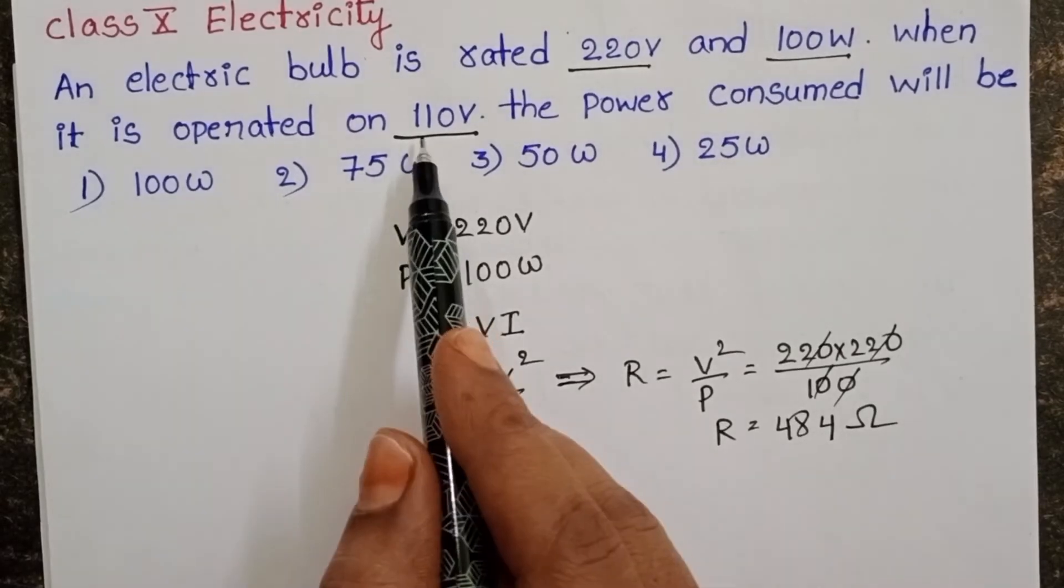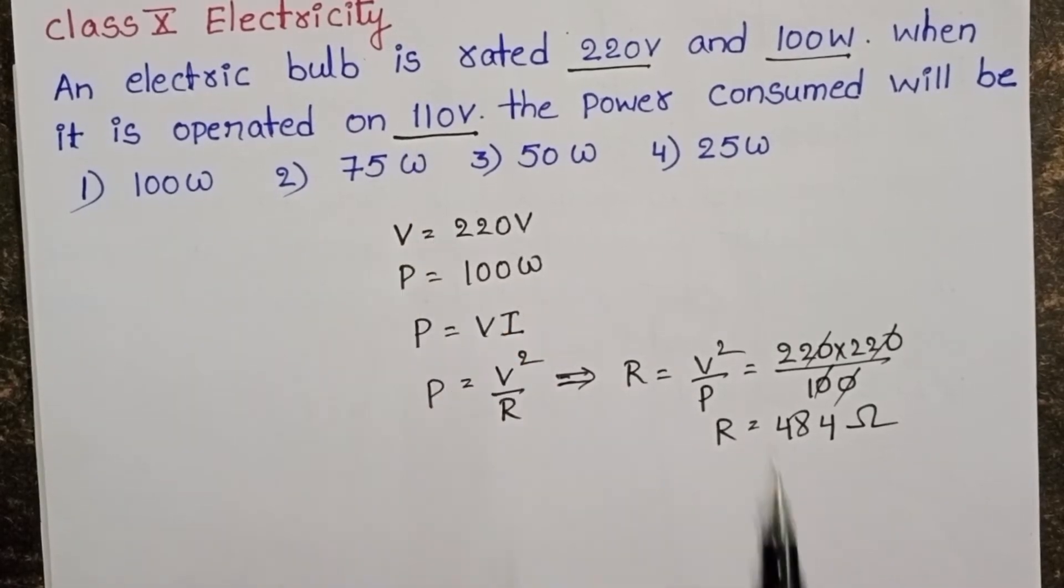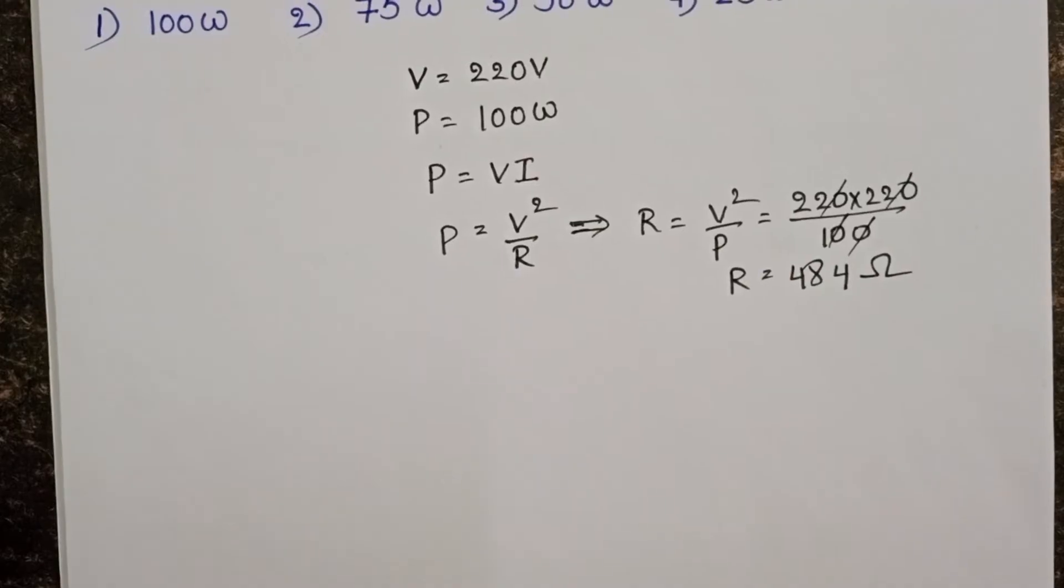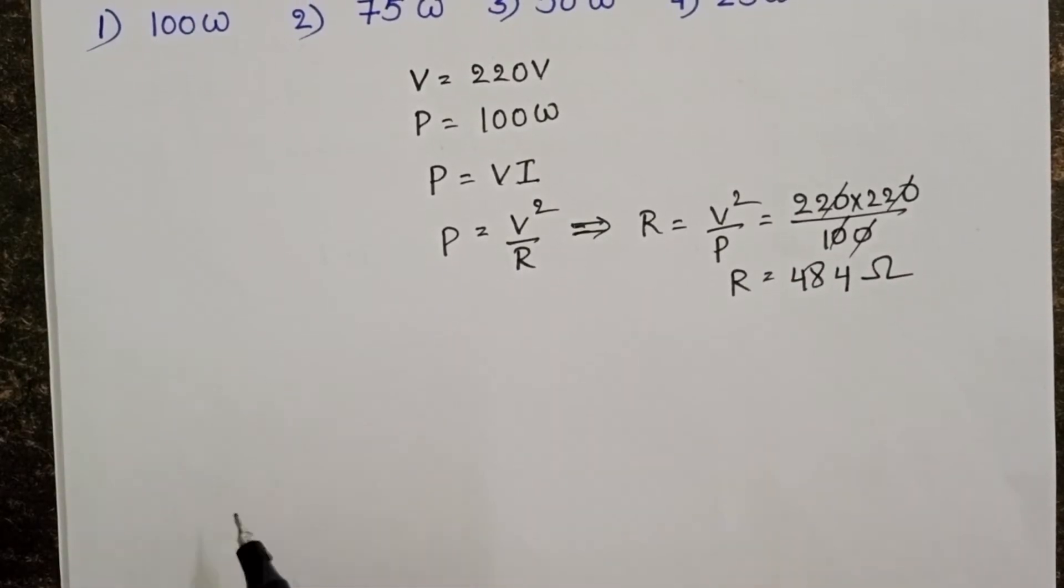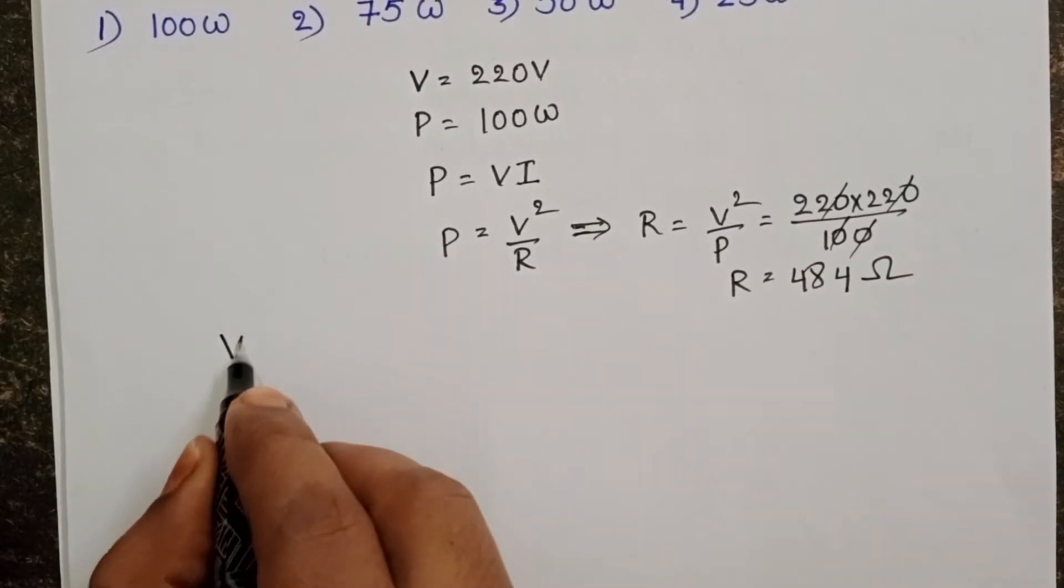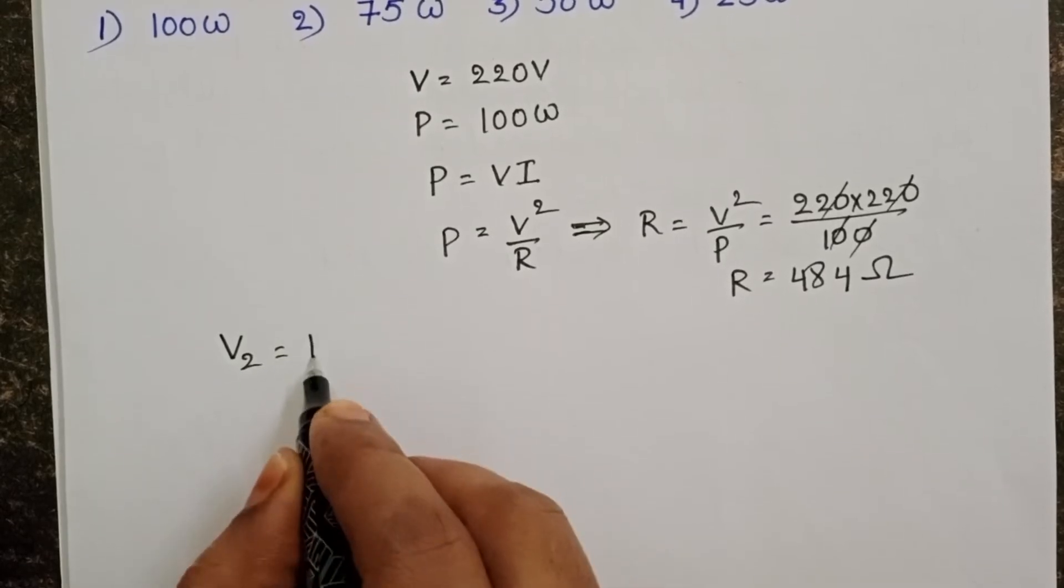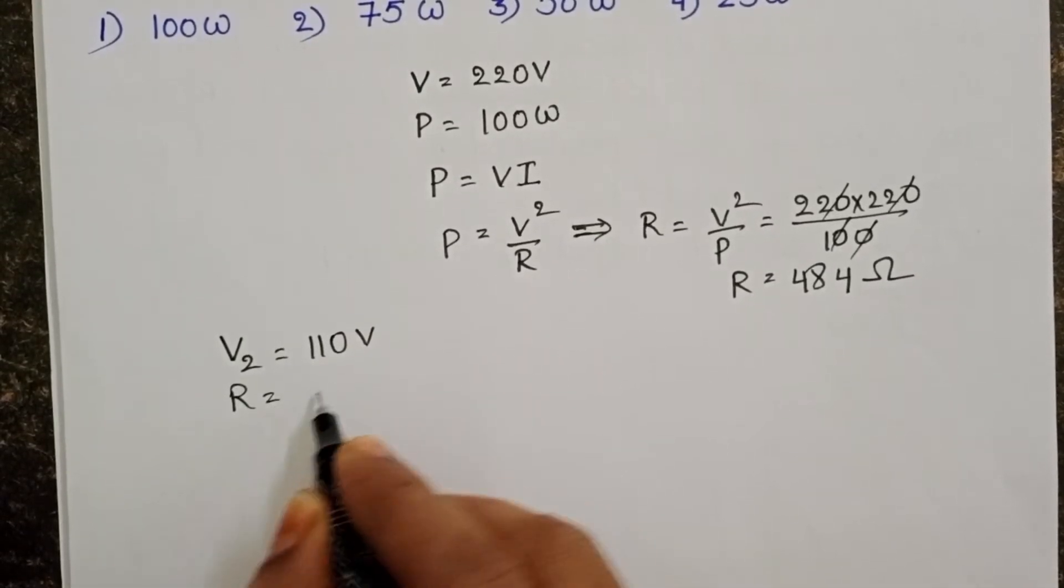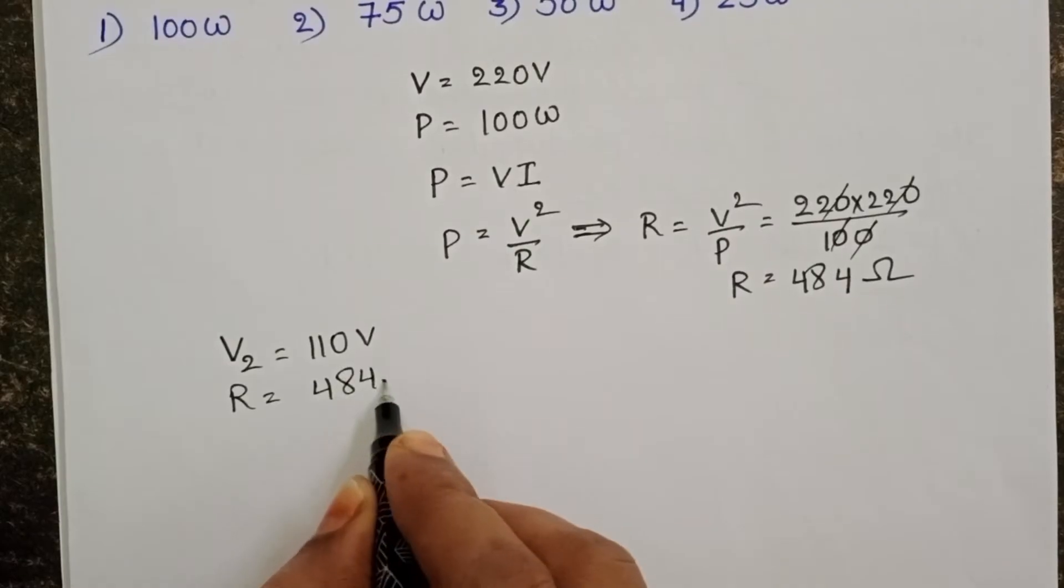Now this bulb is operated on 110 volt potential difference. We have to find out the power consumed in the circuit. Given potential difference is equals to 110 volt and resistance of the bulb is 484 ohms.